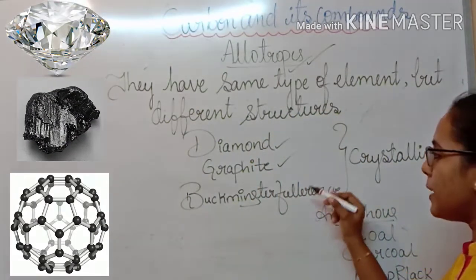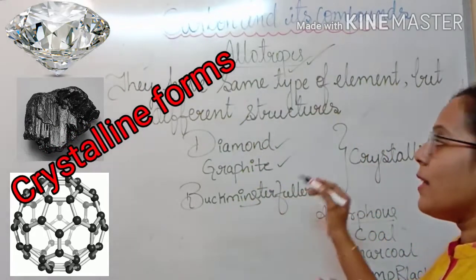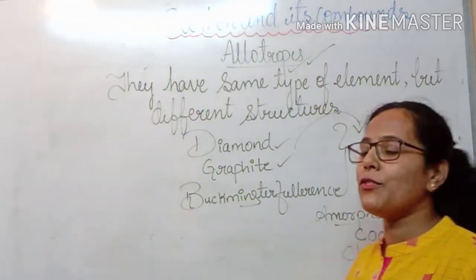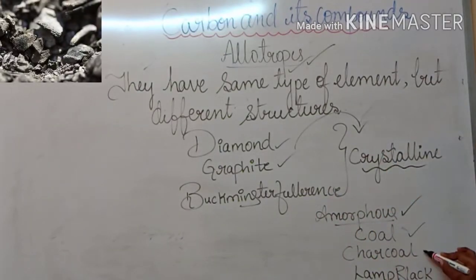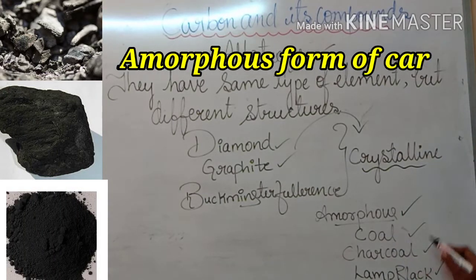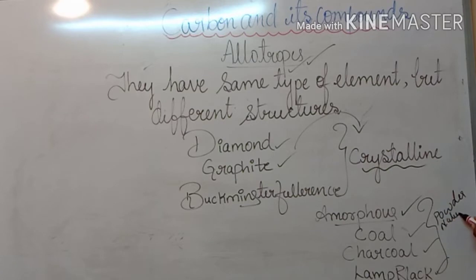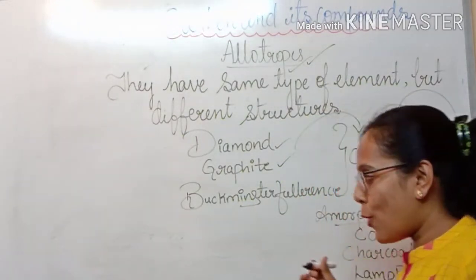Diamond, graphite, and Buckminster Fullerene are the three important allotropes we are going to focus on, and they fall under the category of the crystalline form of carbon. There is also another form of carbon called the amorphous form of carbon. Examples of the amorphous form are coal, charcoal, lamp black, and soot. These exist in powder form and are obtained from the crystalline form of carbon, which is why we are going to focus mainly on the crystalline form.